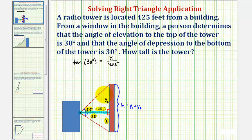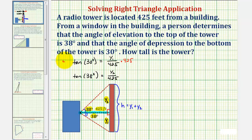Looking at the upper right triangle, we can say that the tangent of 38 degrees is equal to the opposite side divided by the adjacent side, or y sub two divided by 425 feet. Notice how in both cases, to solve for y sub one and y sub two, we would multiply both sides of the equation by 425. Therefore, y sub one is equal to 425 times tangent of 30 degrees.